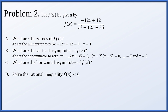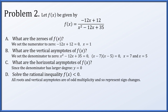Because the denominator is degree two and the numerator is degree one, the denominator has larger degree, so the horizontal asymptote is y = 0. To solve the rational inequality f(x) < 0, every root and vertical asymptote has odd multiplicity, so the function changes sign at x = 1, x = 5, and x = 7.